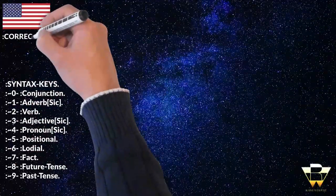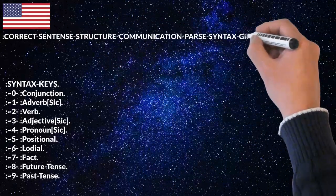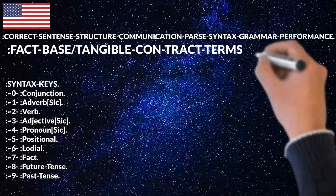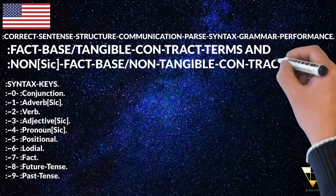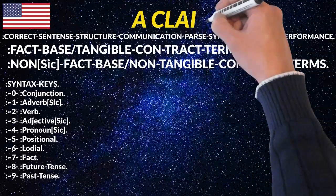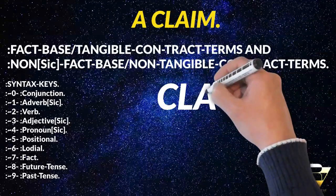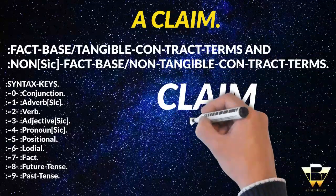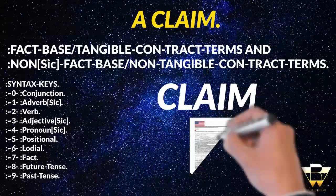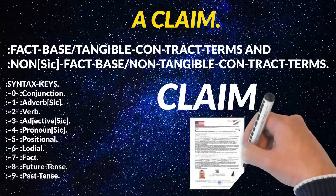In this video, I'm going to continue on with another example of how to tell the difference between a fact-based term and a non-fact-based term — a tangible contract term and a non-tangible contract term. Here you see we have a two-word sentence: 'a claim.' Let's look at the word 'claim.' Can you and I certify what that is? Well, certainly I can make a claim — I know that I've done it, I've performed it, and with the performance of the claim, creation is for sure.